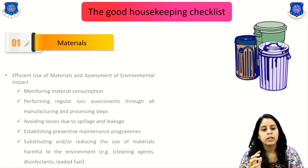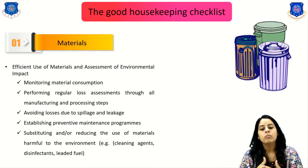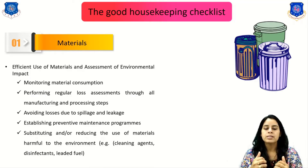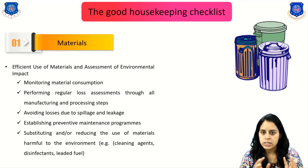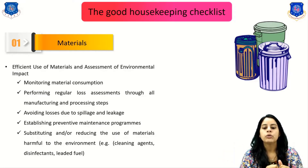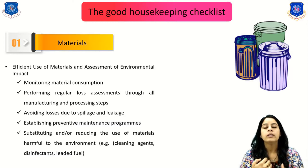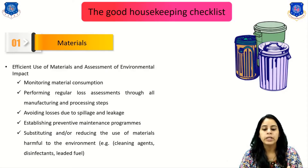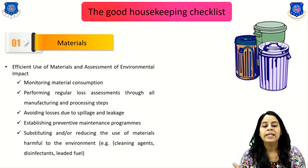Discussing the checklist in detail: the first item is materials — the efficient use of materials and assessment of environmental impact. This includes monitoring material consumption, performing regular loss assessments across all manufacturing and processing steps, avoiding losses due to spills and leakages, establishing preventive maintenance programs, and substituting or reducing the use of materials harmful to the environment, such as cleaning agents, disinfectants, and leaded tools.